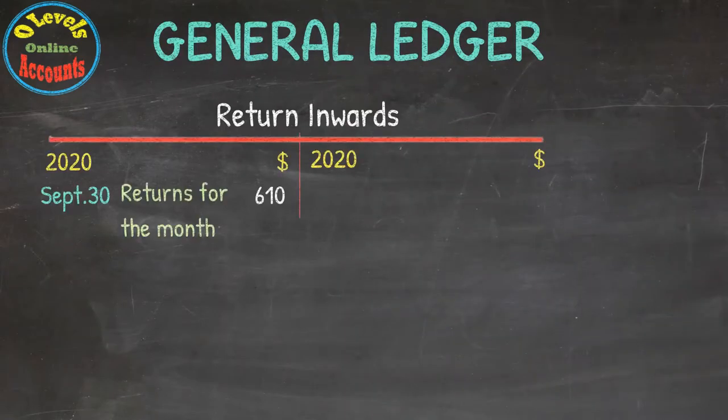After that, we will prepare a Return Inwards account and put the total amount of Return Inwards into it, that is 610. This is called the general ledger.